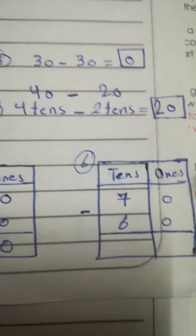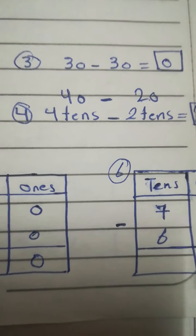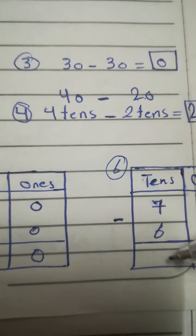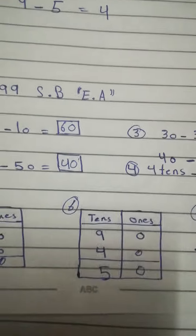Here, number 6. 0 minus 0 is 0. 7 minus 6. We have 7. Take away 6. How many are left? 1. So, 10. Okay?